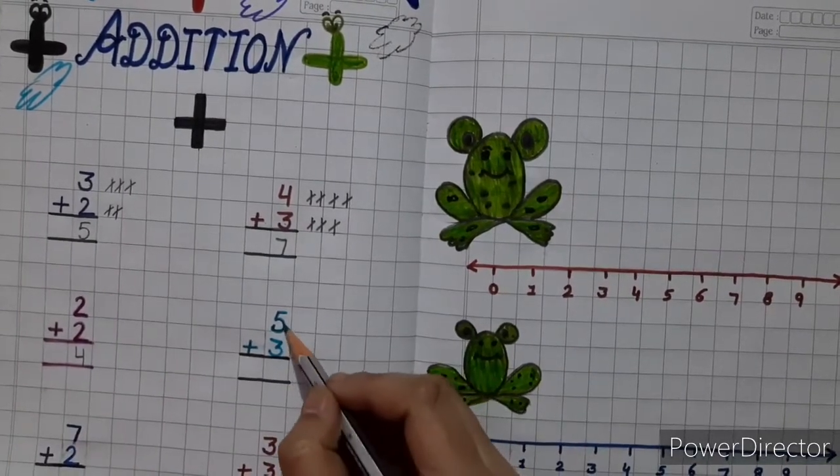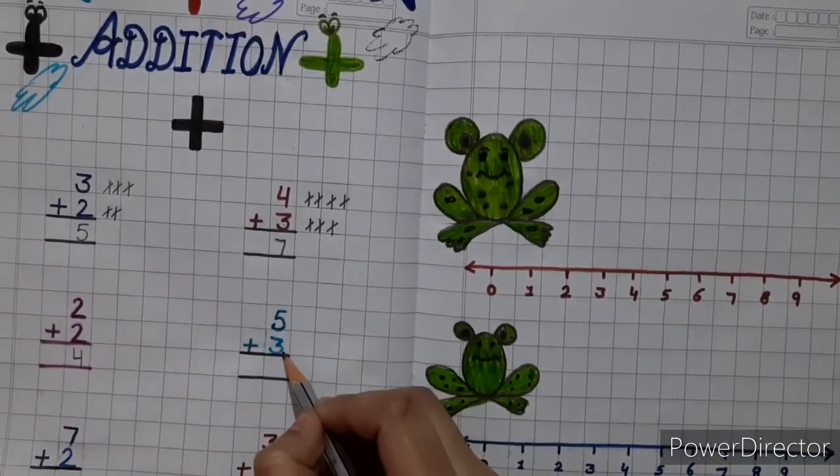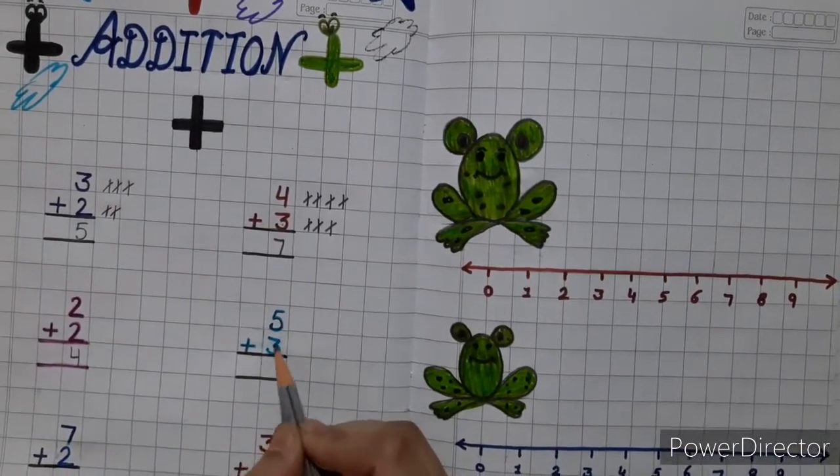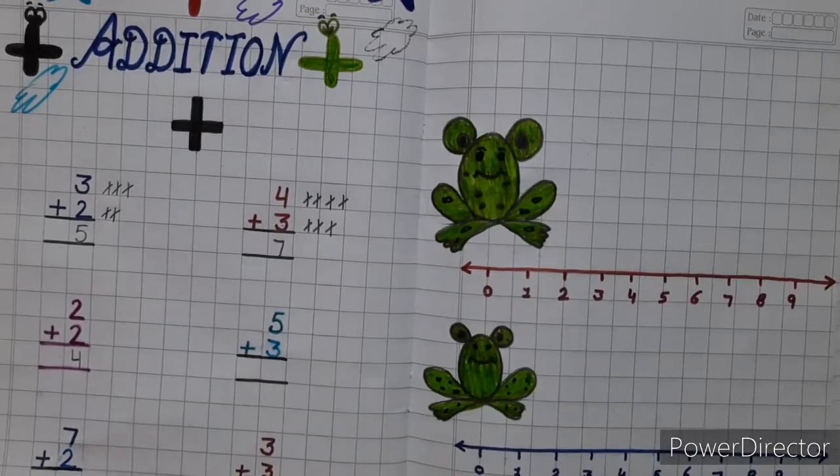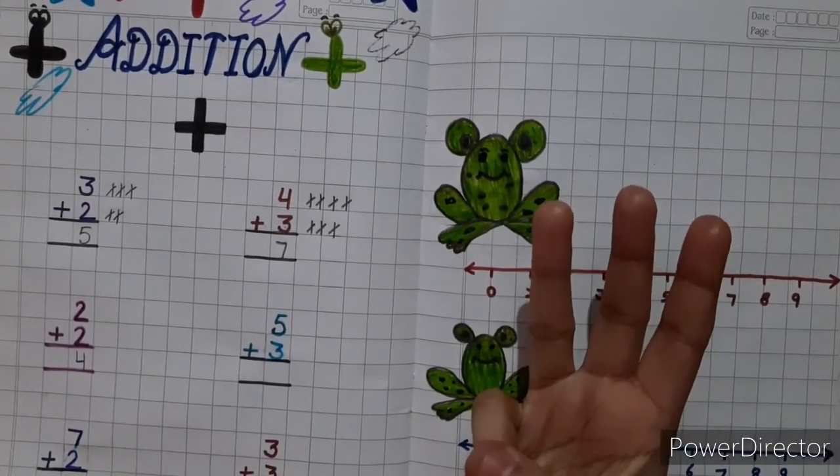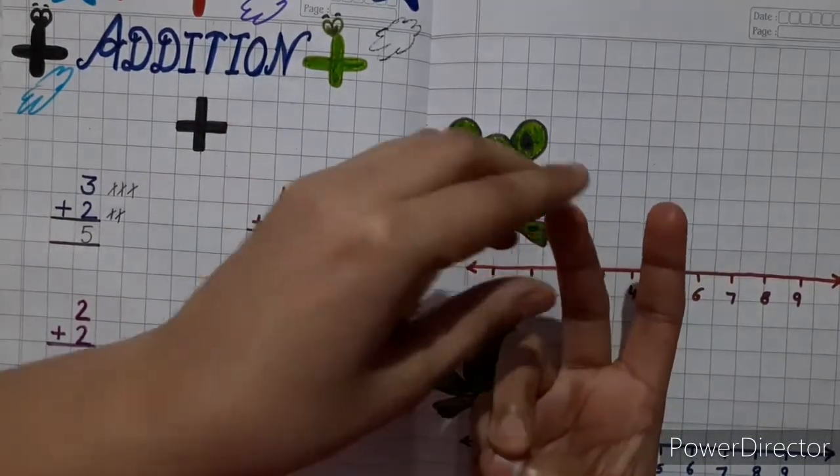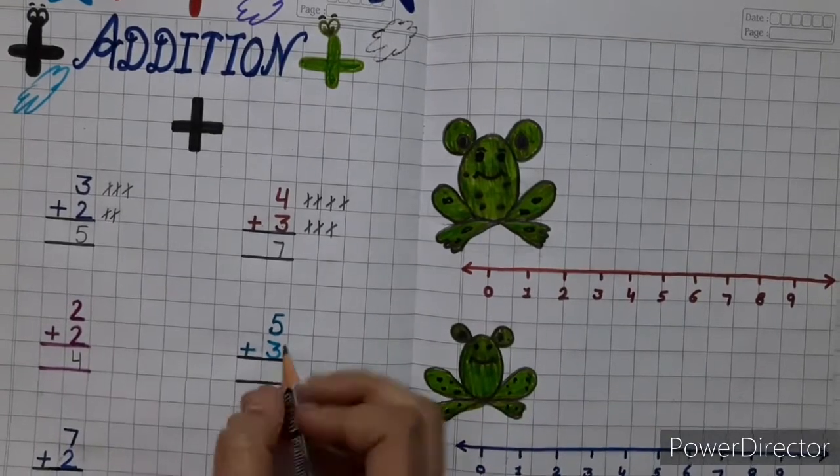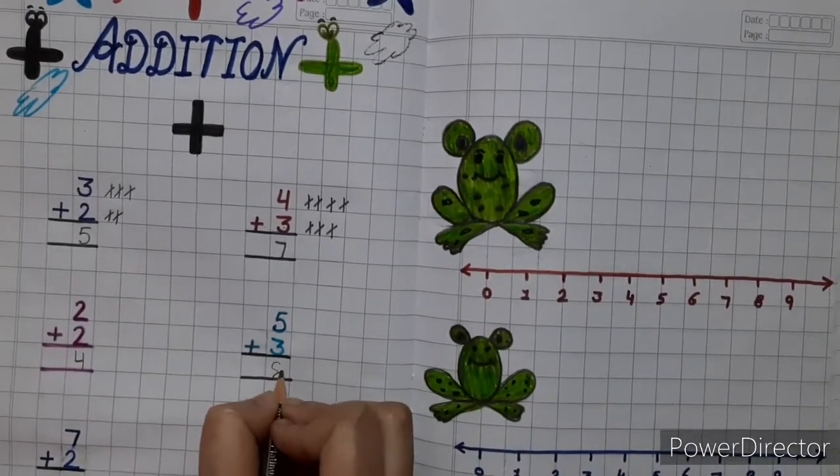Next is 5 plus 3. Keep 5 in your mind and 3 fingers up. Now count after 5, 6, 7, 8. So answer is 8. So write 8 here.